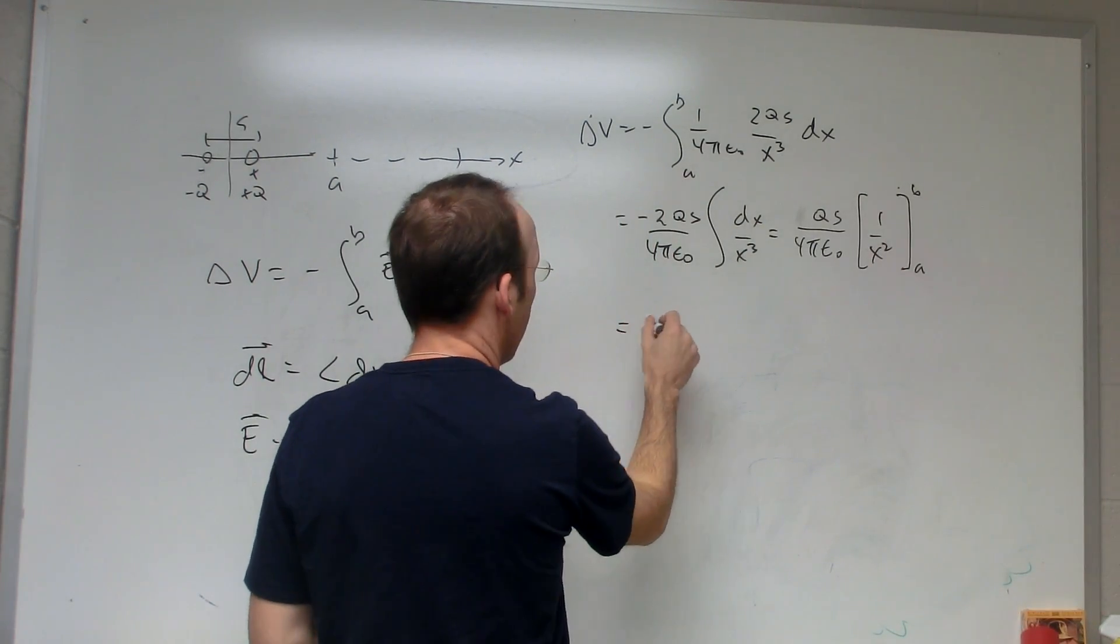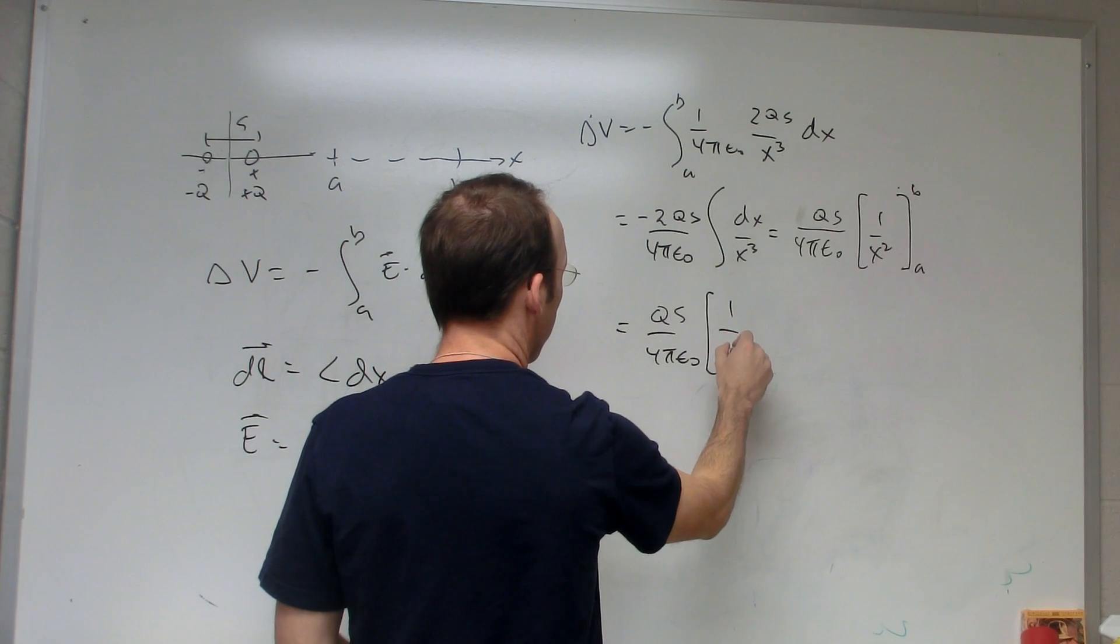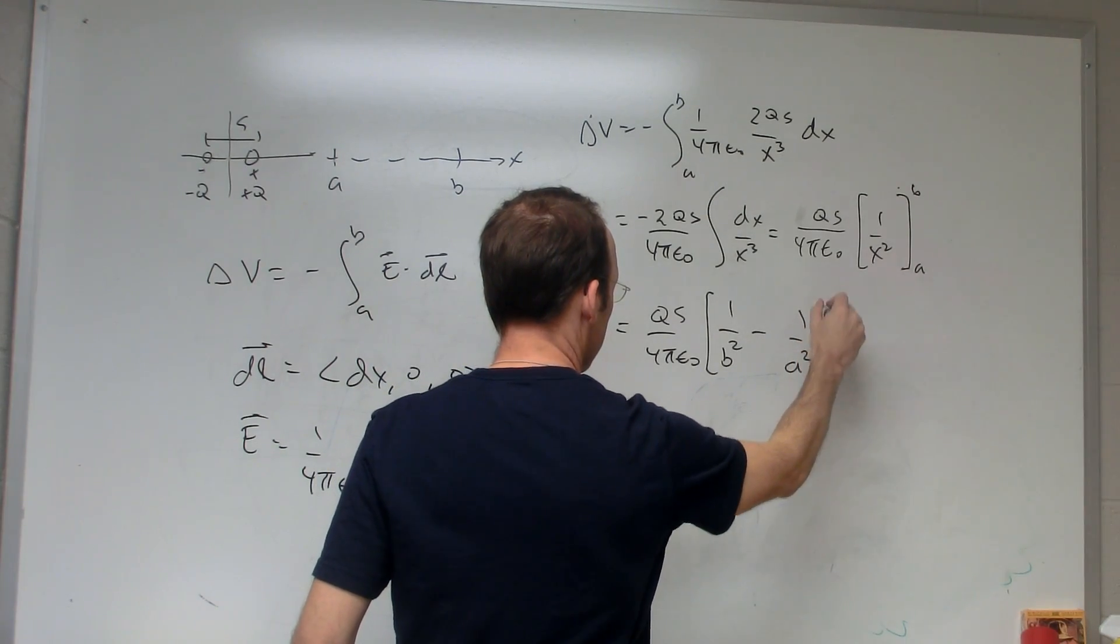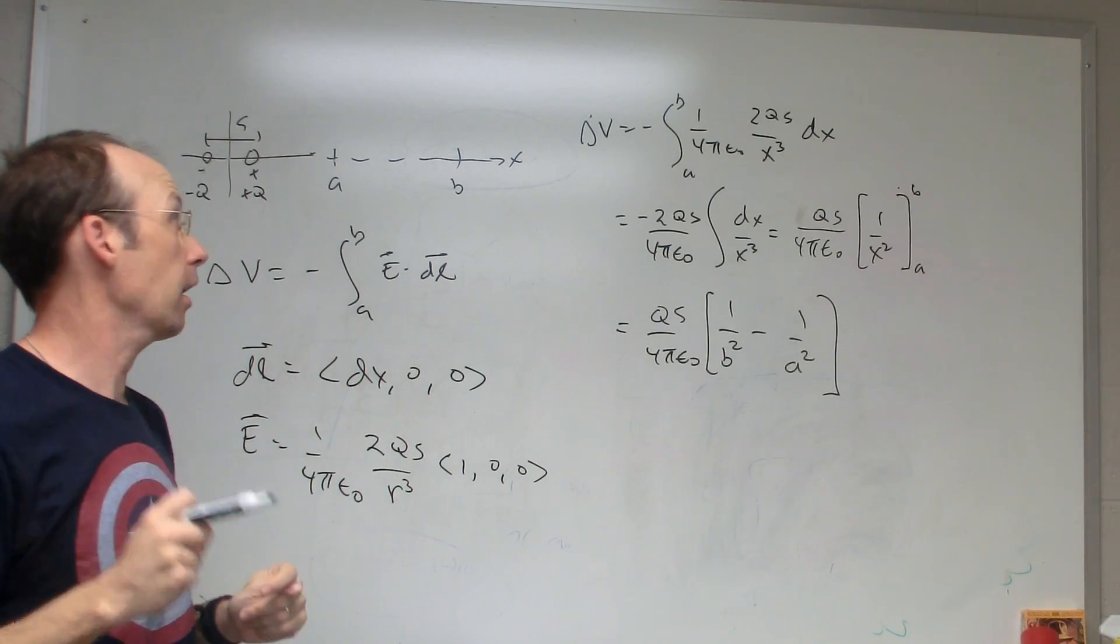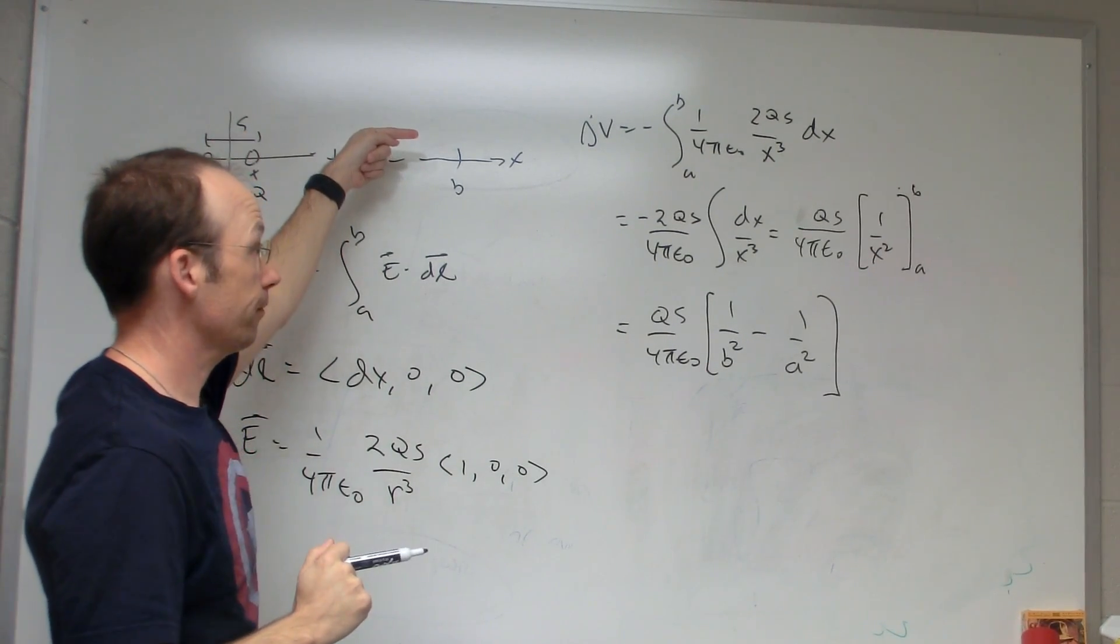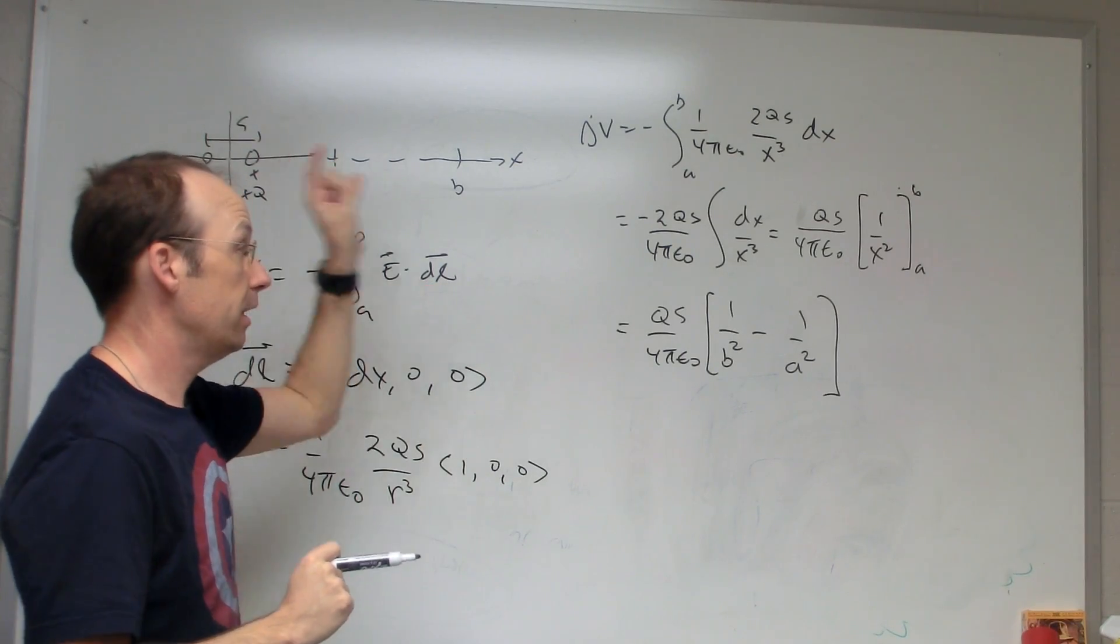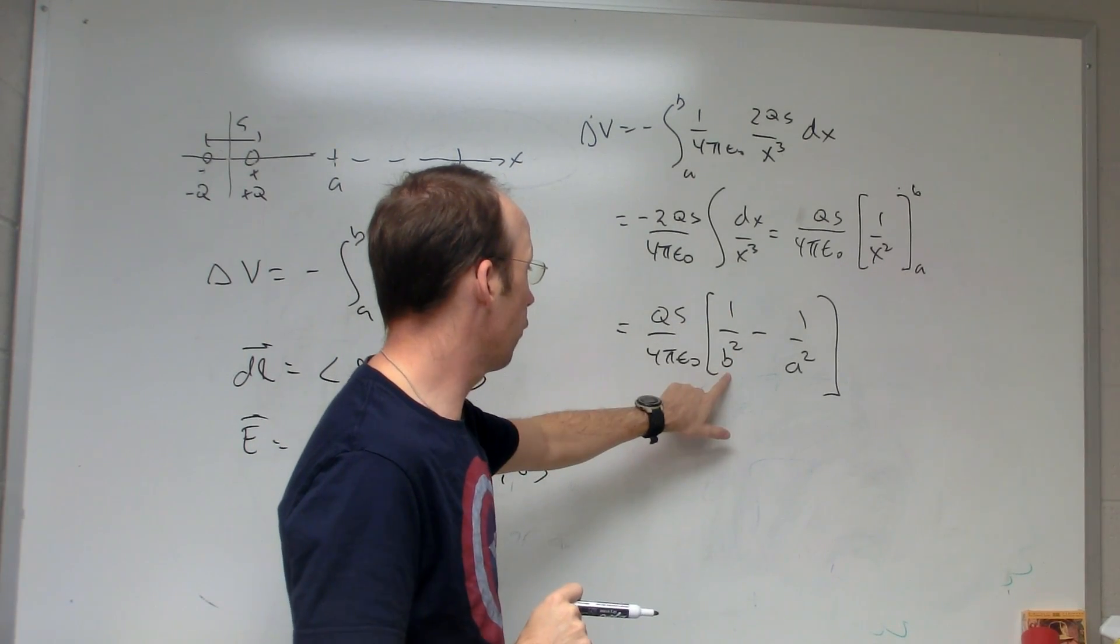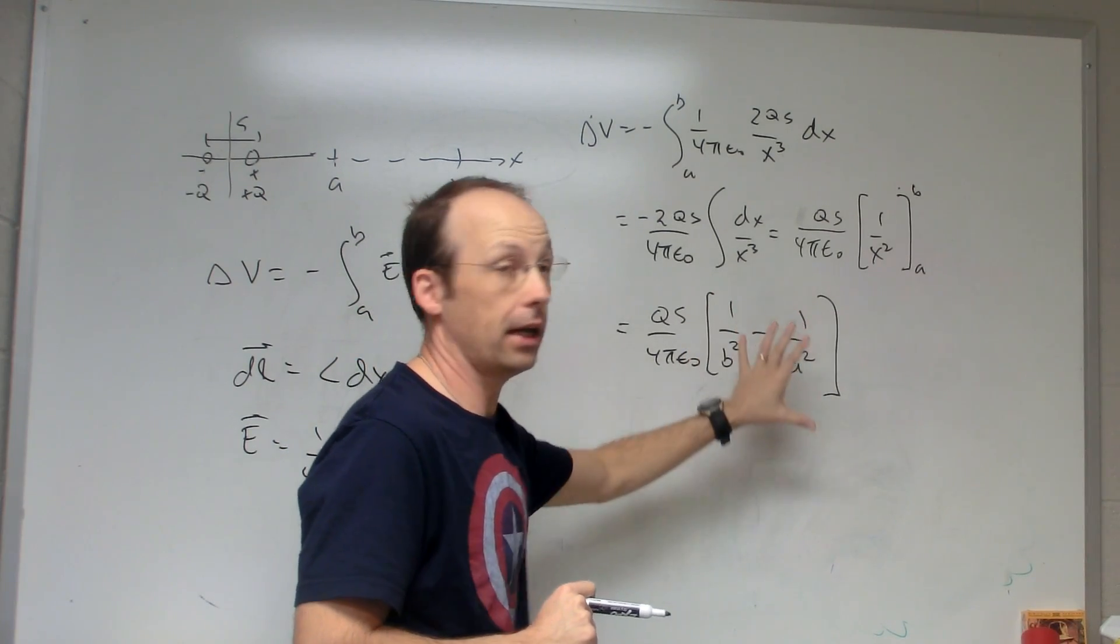So now I'll just evaluate that. I get Qs over 4 pi epsilon 0, 1 over b squared minus 1 over a squared. I'm done. I'm done, but I should check. Okay, let's check a couple things. First, if the positive charge is right here, the electric field is that way. So if I'm going from here to there, I'm going in the same direction as the electric field, I should have a negative change in potential. Is this a negative change in potential? Well, that's positive, that's positive, that's positive. But I have 1 over b squared minus 1 over a squared, and b is larger than a, so this will give me a negative value. So that's good.